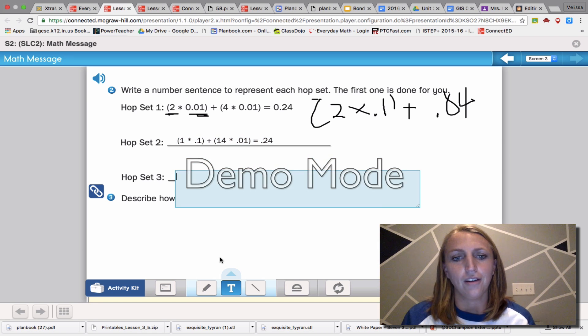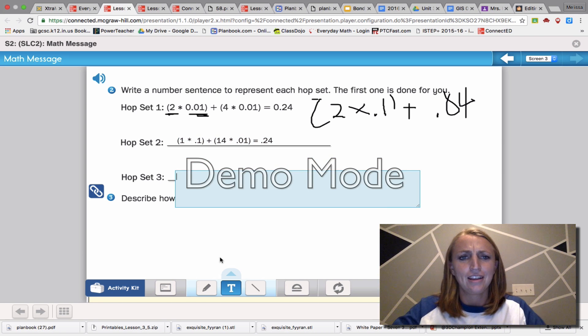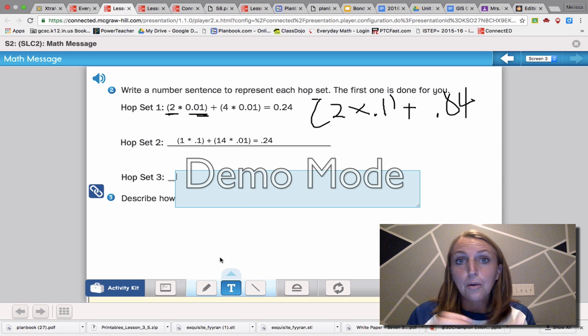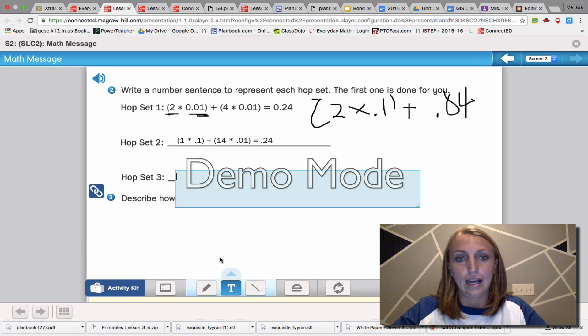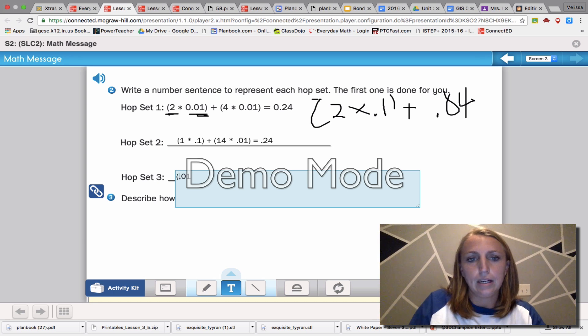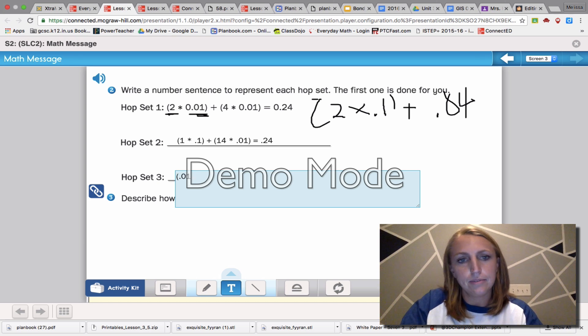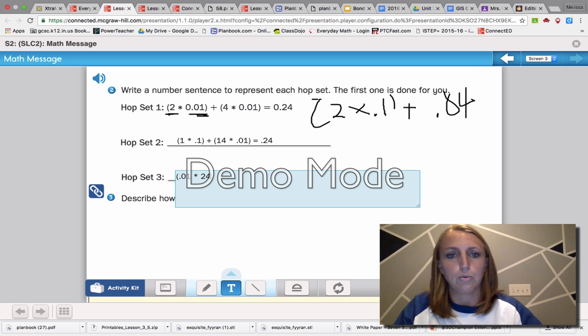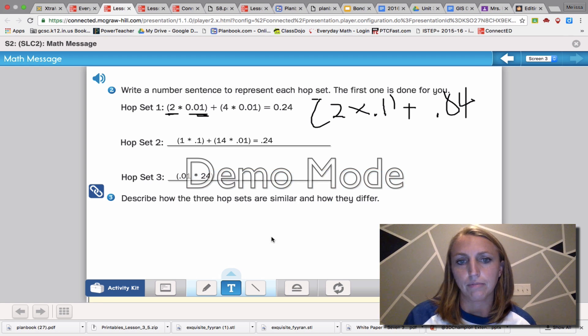If we go here, remember, we had zero big hops, and Fido just takes all these little hops. So that expanded form, we would write it as point zero one, or one one hundredth times twenty four, because there's twenty four of them.